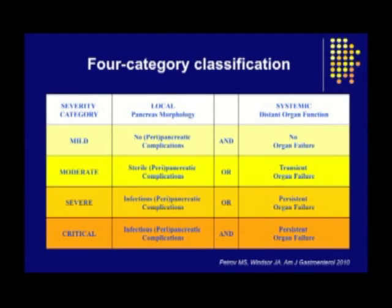This data provides a sound justification for the four-category classification of acute pancreatitis, which is available as an open access article in the January 2010 issue of the American Journal of Gastroenterology. This new classification is consistent with the original Atlanta classification, but takes it further by emphasizing the importance of persistent organ failure, as opposed to any organ failure in the Atlanta classification, and the importance of infectious pancreatic complications, as opposed to any local complication in the Atlanta classification.